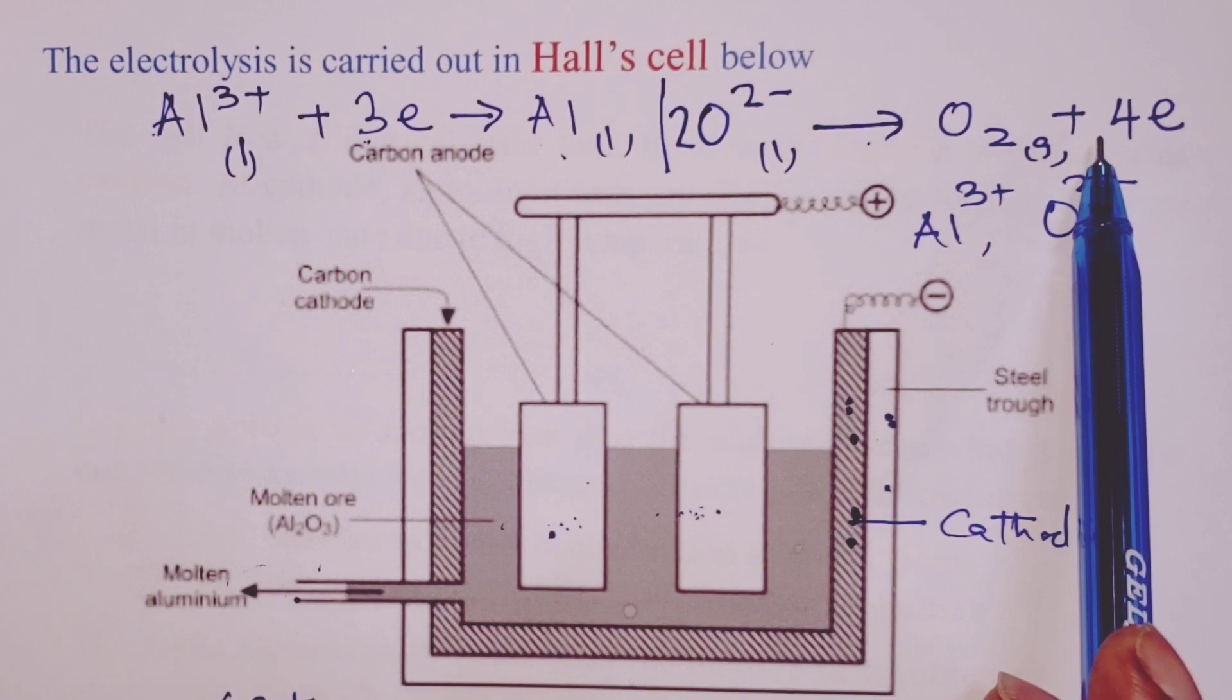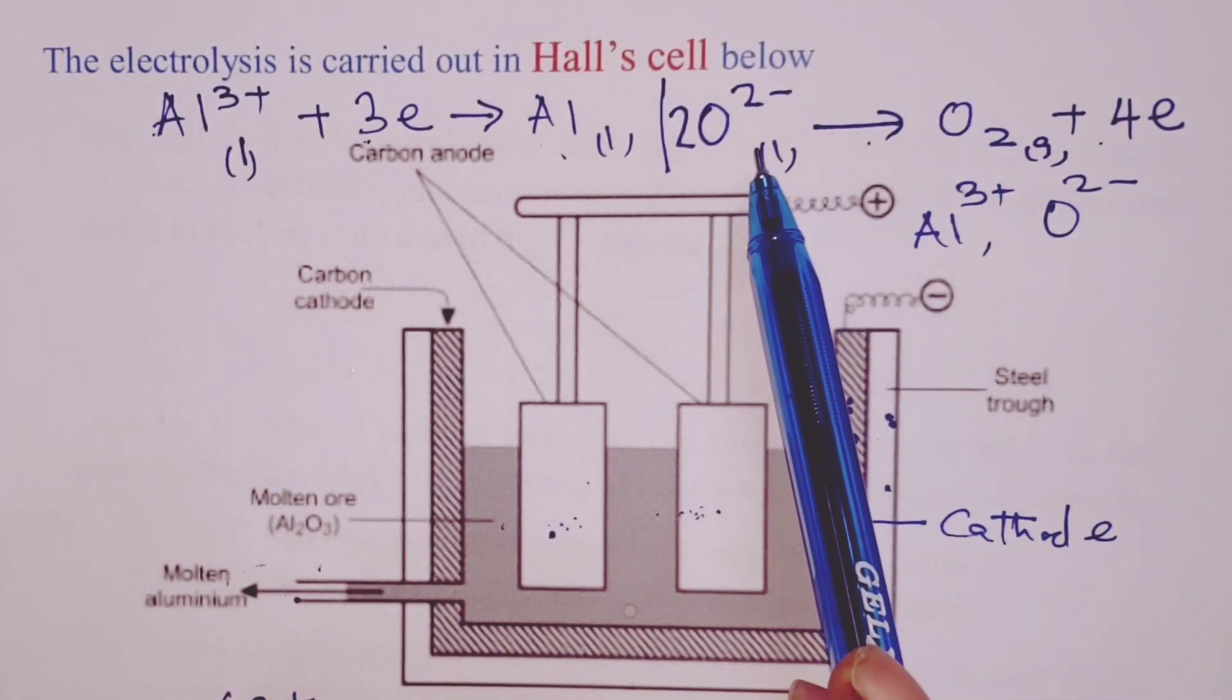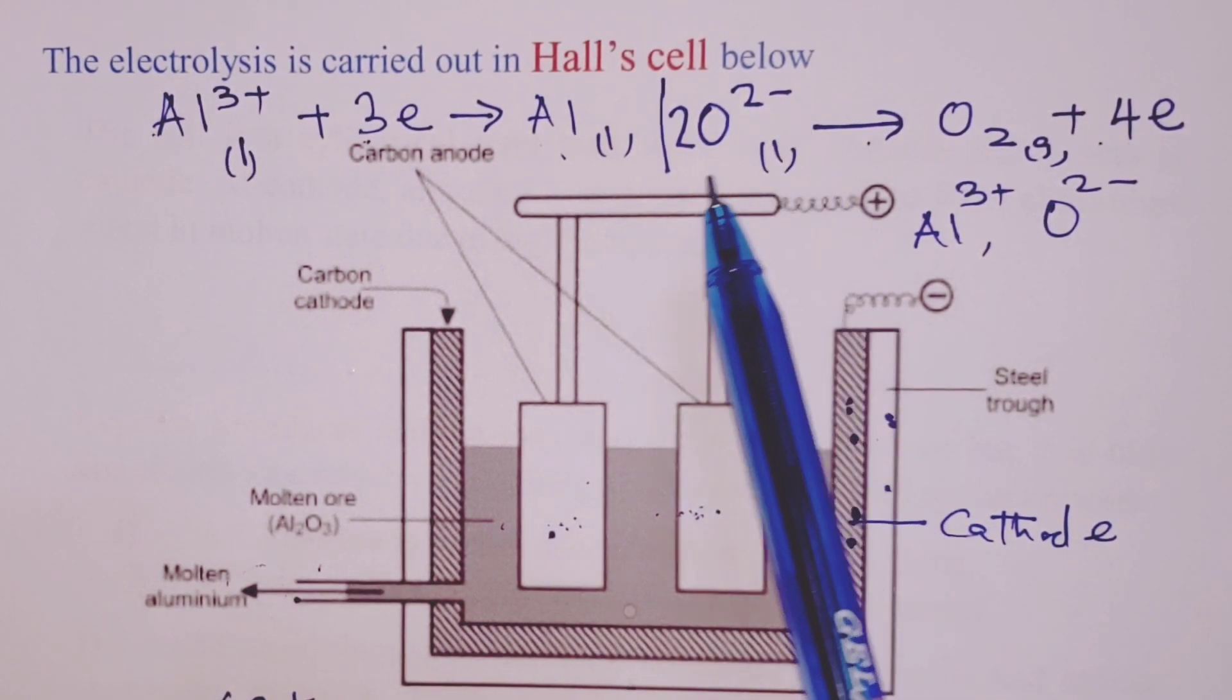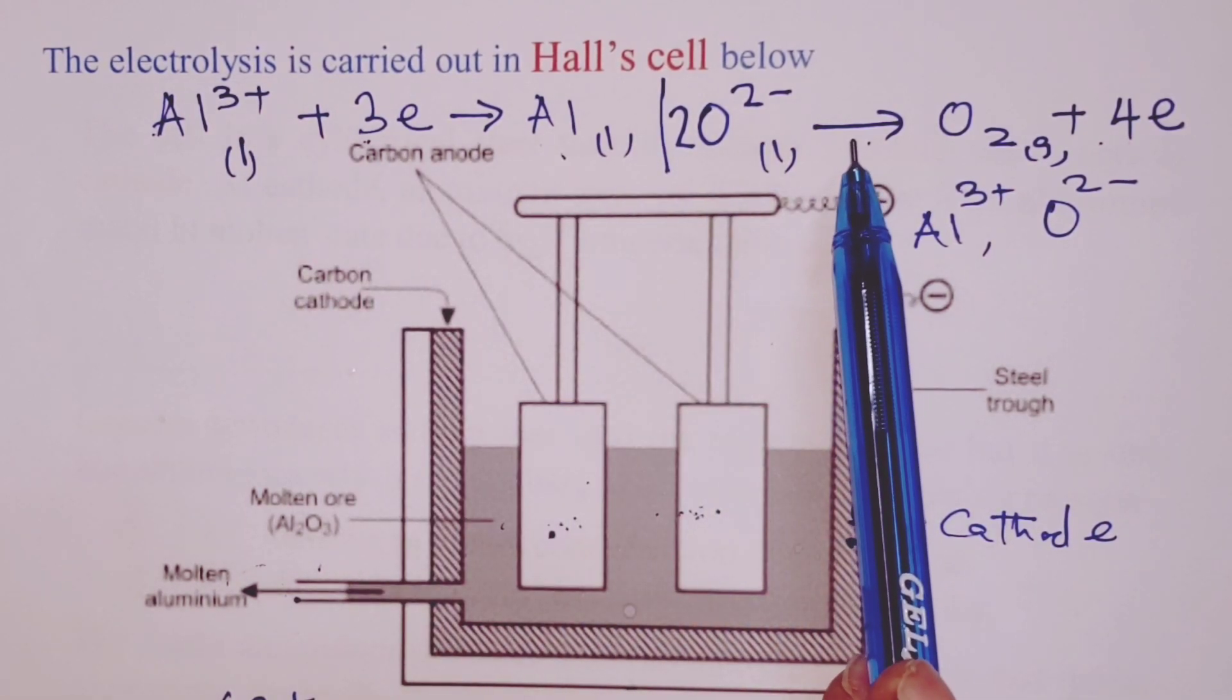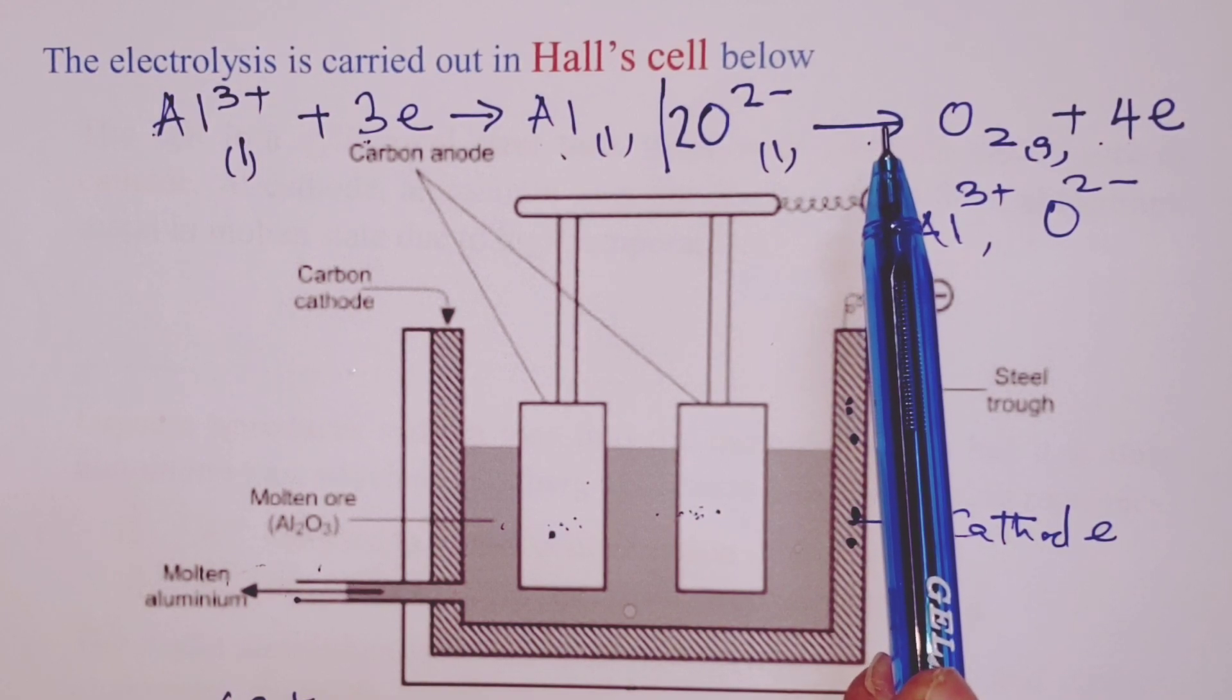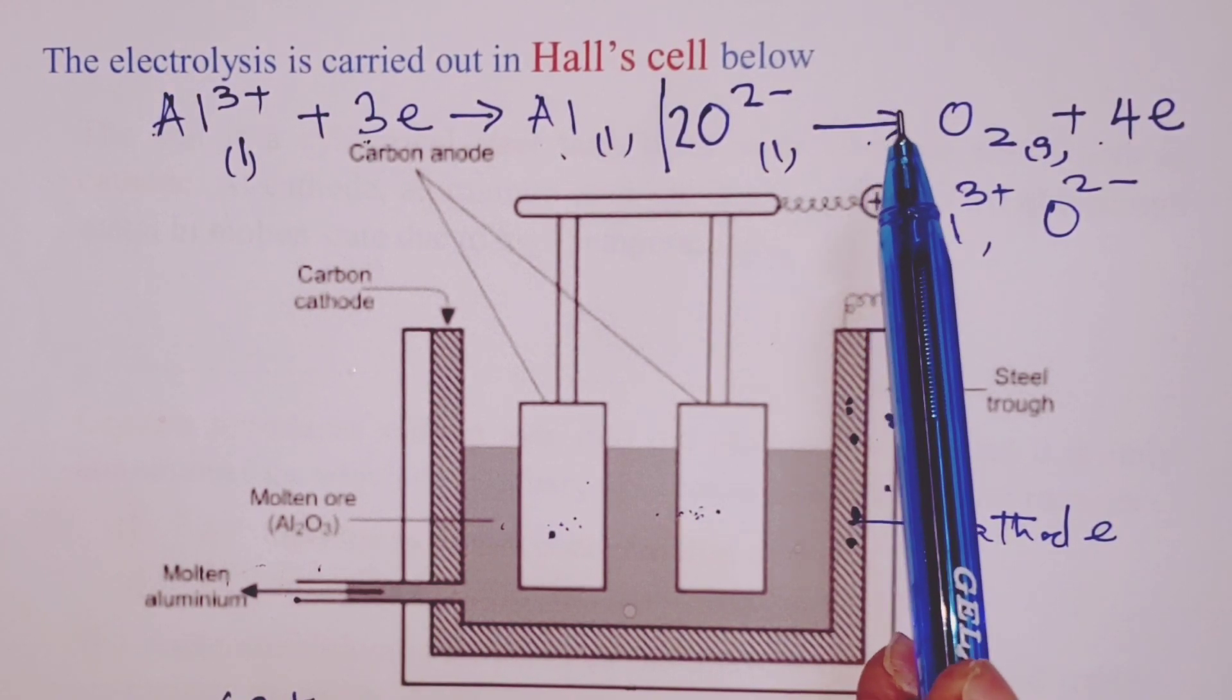That is done purposefully so that we balance the number of moles of electrons. But candidates, when we are asked the equation for the discharge at cathode and anode, it is always good or always allowed to give the equations in the simplest ratio. And that is exactly what we have done.